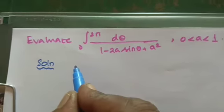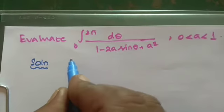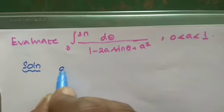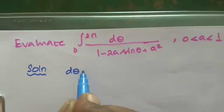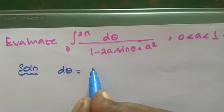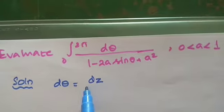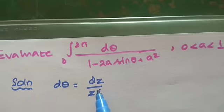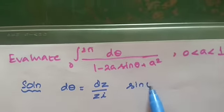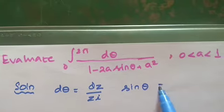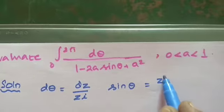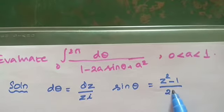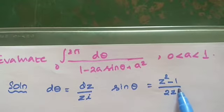We will use the substitution z equal to e^(iθ). Then dθ is nothing but dz divided by zi, and sinθ is also equal to (z squared minus 1) divided by 2zi.